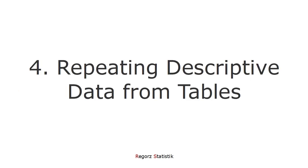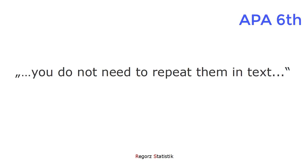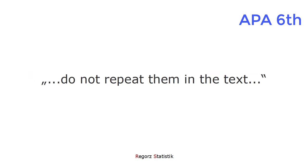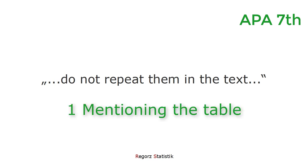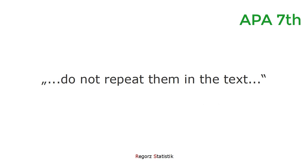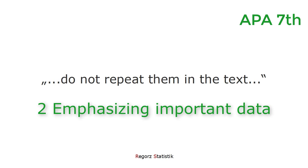The next change is about repeating descriptive data which you have reported in a table. The old rule was: you do not need to repeat them in text. With APA 7, that has changed. Now it is: do not repeat them in the text — so now it's explicitly forbidden. There are two exceptions that have stayed the same from 6 to 7: you should call out the table with the descriptive data in the text, and you may use the text to highlight important parts of the descriptive data.